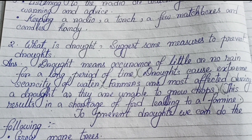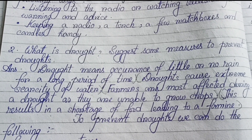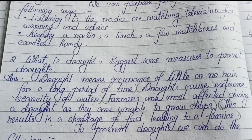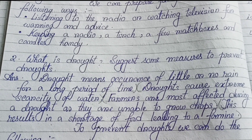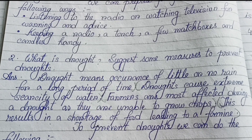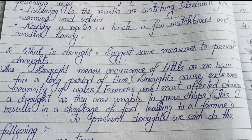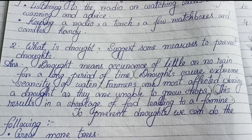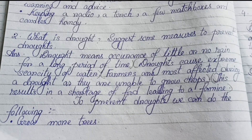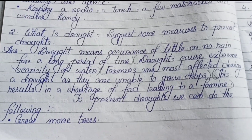Number two: What is drought? Suggest some measures to prevent drought. Drought means occurrence of little or no rain for a long period of time. Droughts cause extreme scarcity of water. Farmers are most affected during a drought as they are unable to grow crops. This results in a shortage of food leading to a famine.